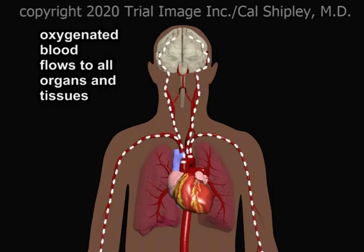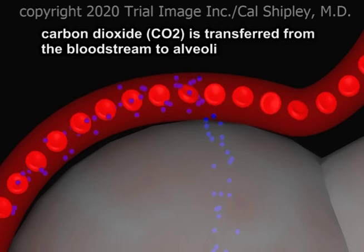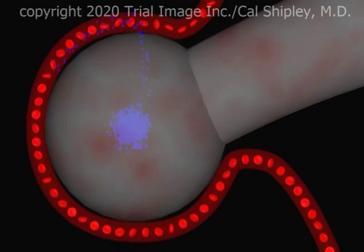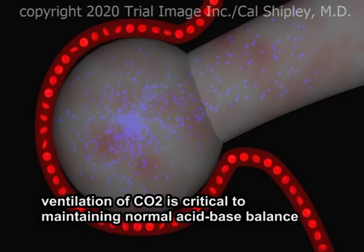The freshly oxygenated blood flows into the left atrium and ventricle and is then pumped via the aorta to all organs and tissues in the body. The alveoli of the lungs also act as receptacles for the removal of excess carbon dioxide from the bloodstream. We breathe out carbon dioxide with each exhalation. This ventilation of carbon dioxide by the alveoli plays a critical role in maintaining proper acid-base balance in the body.